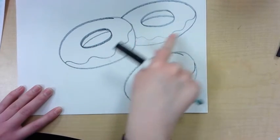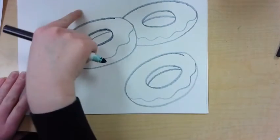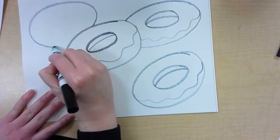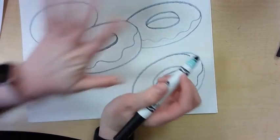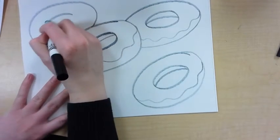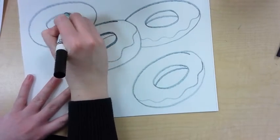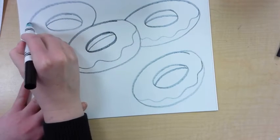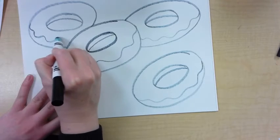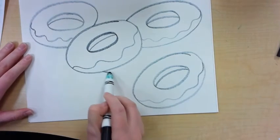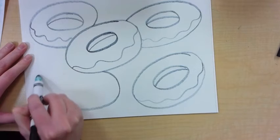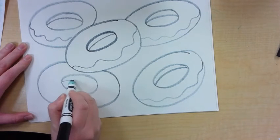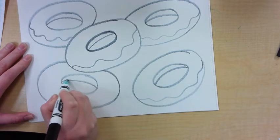So make another doughnut, maybe behind this one. Make at least five doughnuts today. So oval, oval, curve, wave. And I'll make another one right here. Oval, oval, curve, and then a wave.